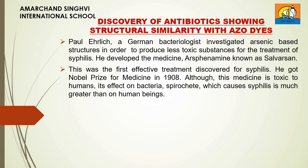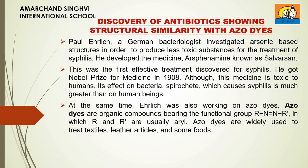Although this medicine is toxic to humans, its effect on the bacteria spirochete which causes syphilis is much greater than on human beings. At the same time, Ehrlich was also working on azodides. Azodides are organic compounds containing the functional group N=N where each of the nitrogen atoms is linked to some aryl group. Azodides are widely used to treat textiles, leather articles and some foods.